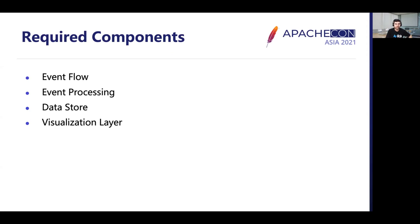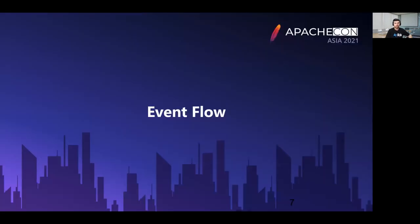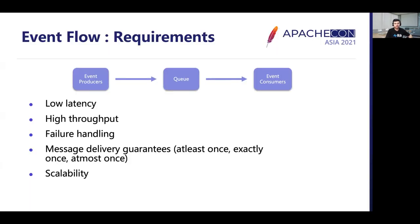Let us now deep dive into the detailed requirements of each of these four components. The first one is event flow. Event flow is used to send events from one place to another in a reliable and guaranteed way. Producers produce messages which are then consumed by consumers. Most commonly this is achieved using a message queue — producers send messages to a queue from where one or more consumers fetch those events. The high-level requirements of event flow are low latency and high throughput for handling really high volumes of data, and failure handling in case there are any producer or consumer issues.